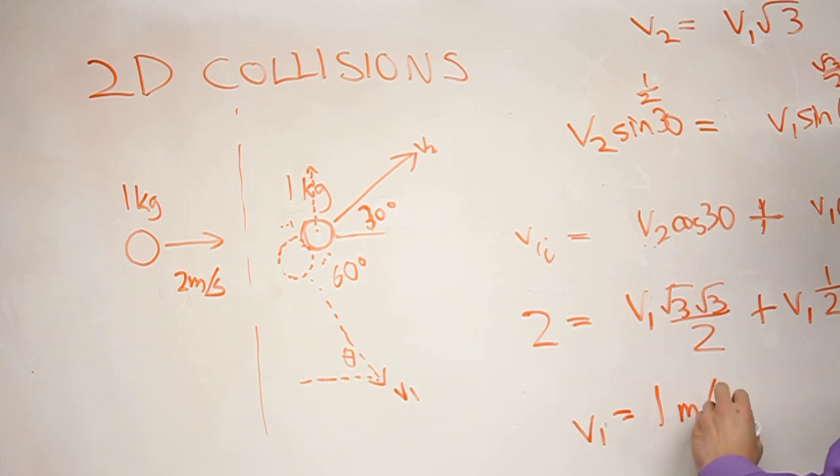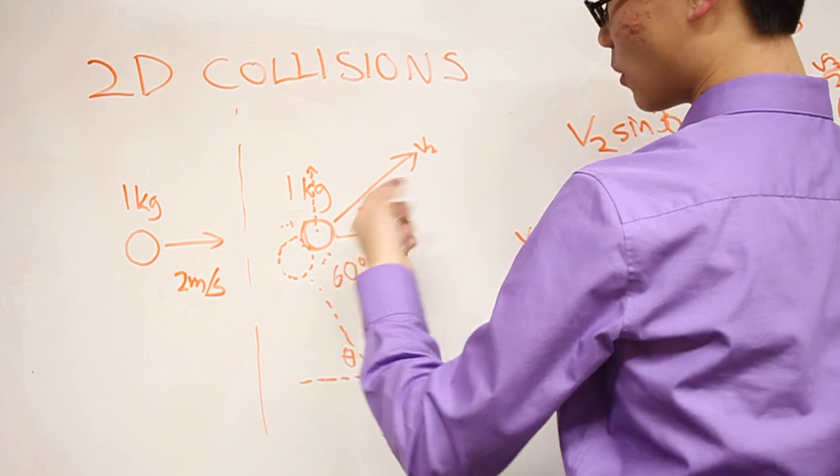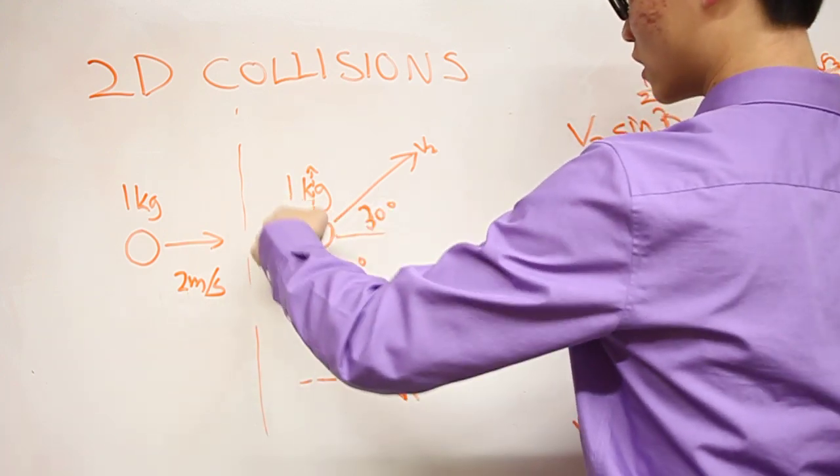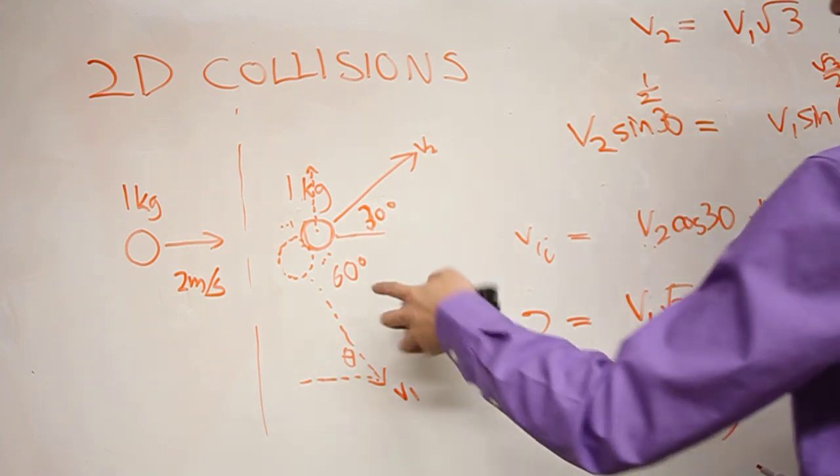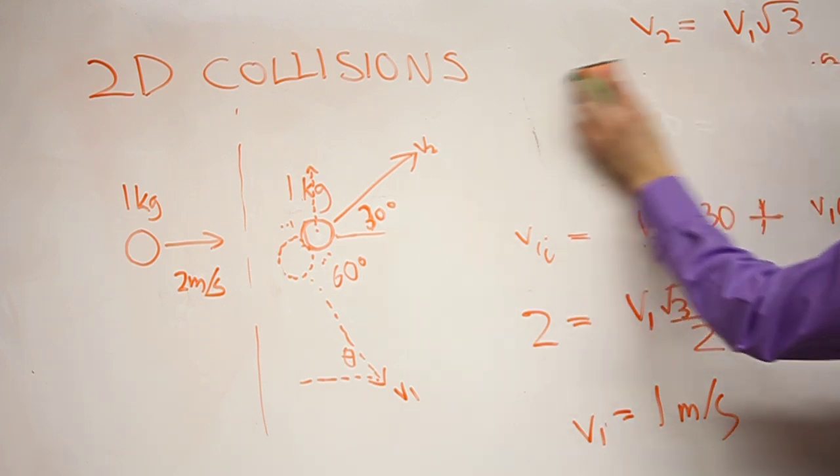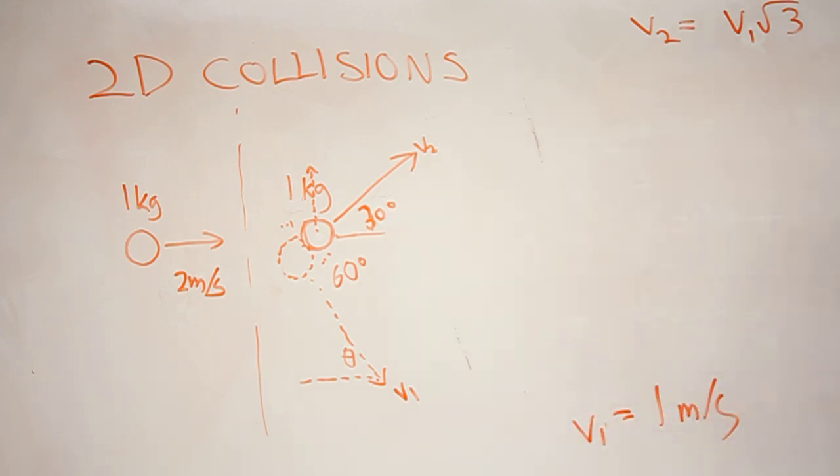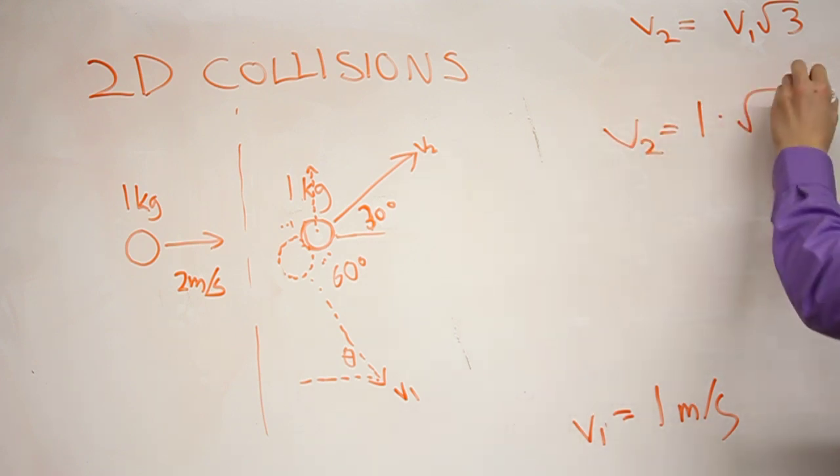Think of it this way. The initial ball had a velocity of 2 meters per second. It hit this ball. And now in this direction, it's traveling at half the speed. And that doesn't necessarily mean that this one's half the speed, because now we're thinking in two dimensions. So let's now take this back into here and solve for V2. So V2 is equal to 1 times √3.